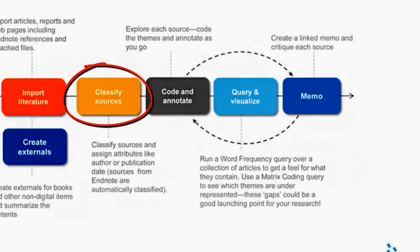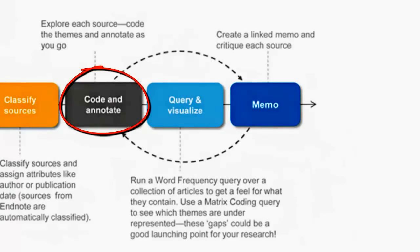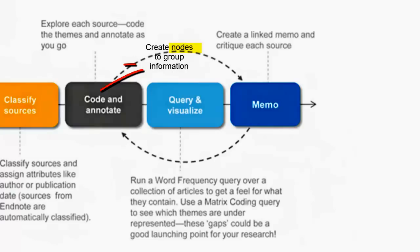Secondly, you can classify sources and assign attributes — that is, specific information about your sources. If you imported your sources from EndNote, this will be automatically classified, such as information about the author, year, journal and so on. You can also create new attributes and classify your sources accordingly. For example, you may want to record information about the methodology used or the theoretical framework of the source you are reading. This information can then be used to analyze the relationship between your topics and these attributes. Once you have imported or created your sources, you are ready to open them and start coding to find themes, topics and theories. You will create notes to group evidence from different sources according to these themes, topics and theories.